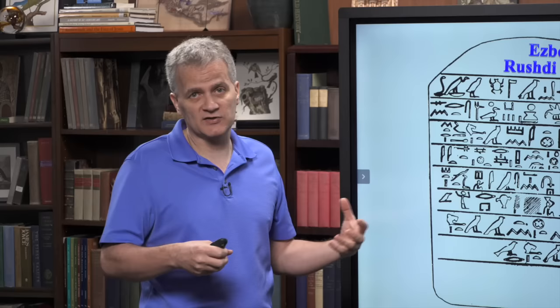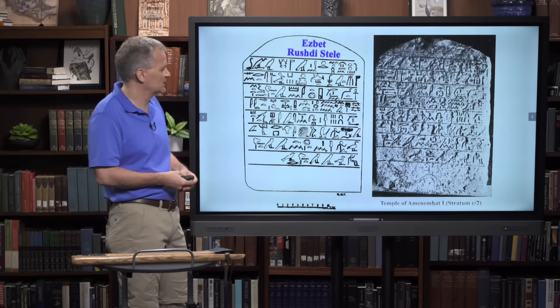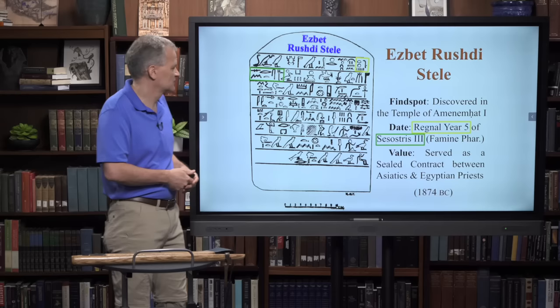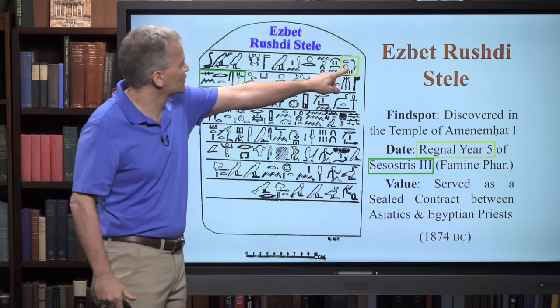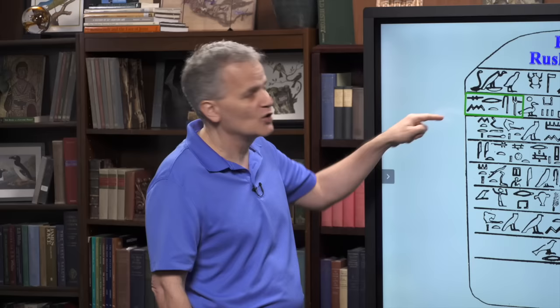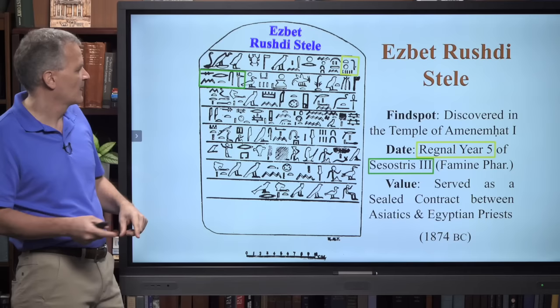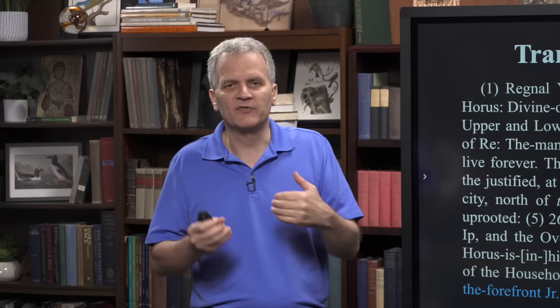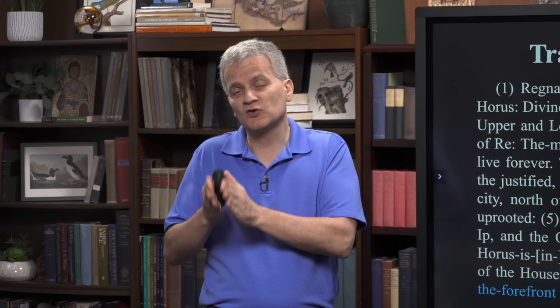Here's a stela that was found there - one I discuss in my book with what I believe is the first accurate translation of this inscription. It mentions a beautiful symbiotic relationship between the Asiatics and the Egyptians who were there. It's dated to regnal year five of Senwosret, whom we know as Sesostris - specifically Sesostris III, who is the famine pharaoh. It records the digging of a dike for the temple estate of Amenemhat I, taking place in year five of Sesostris III's reign.